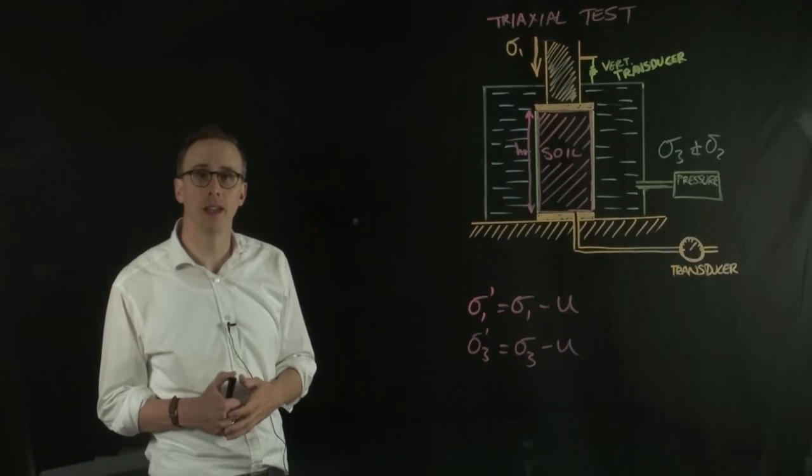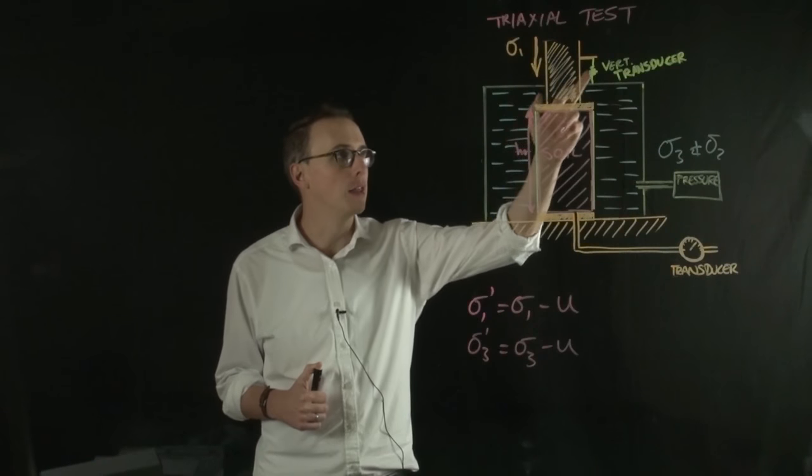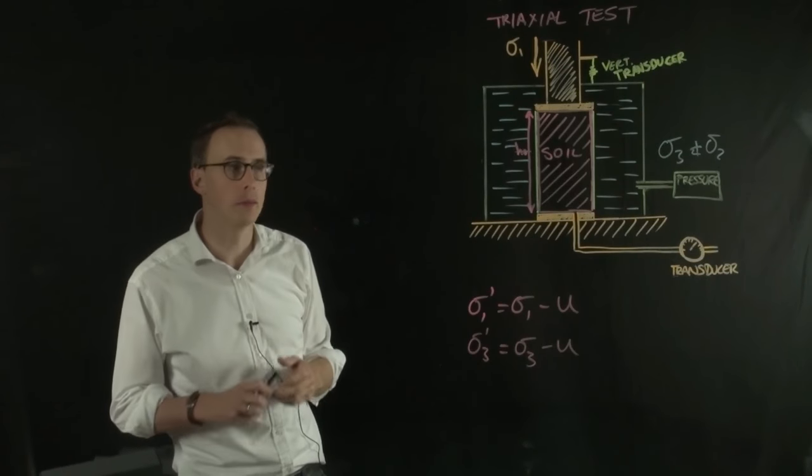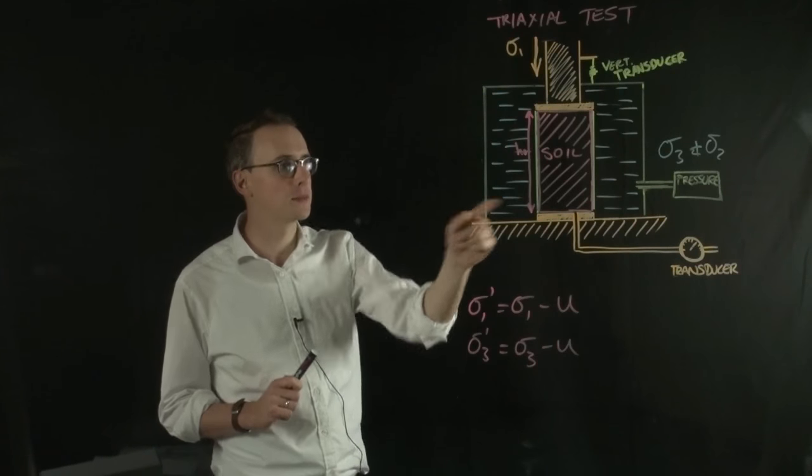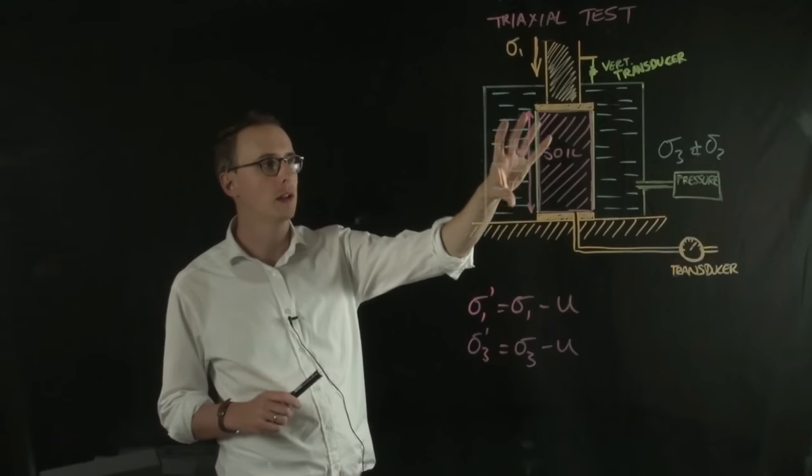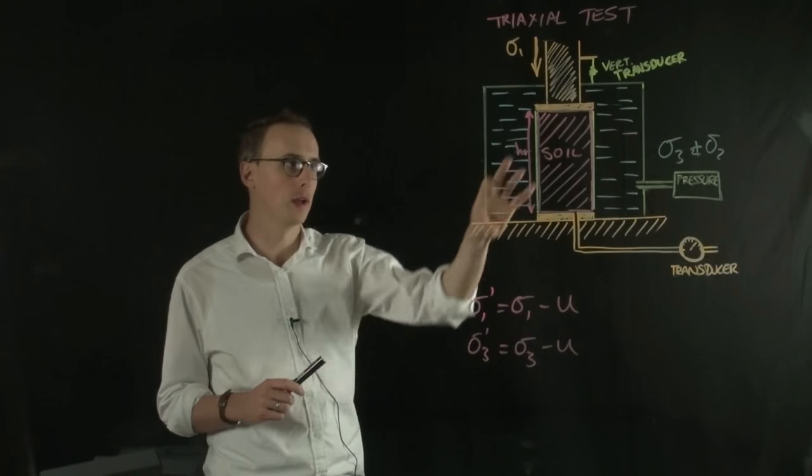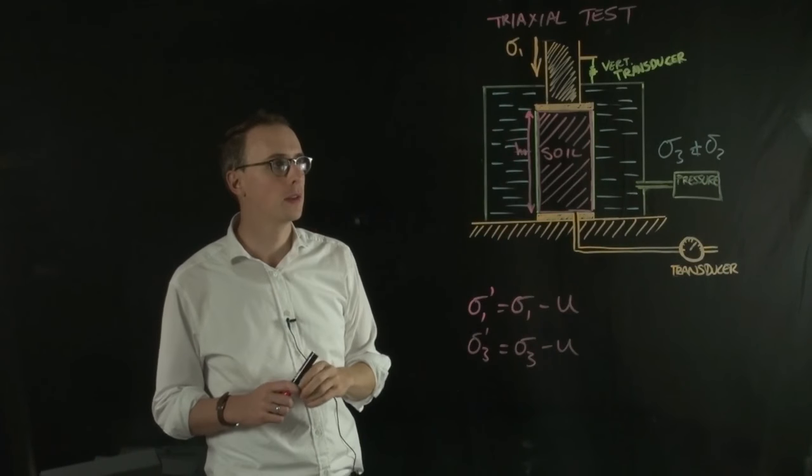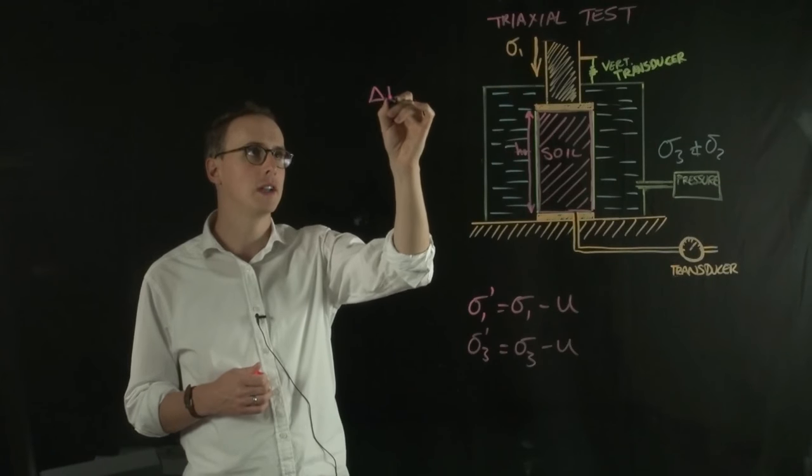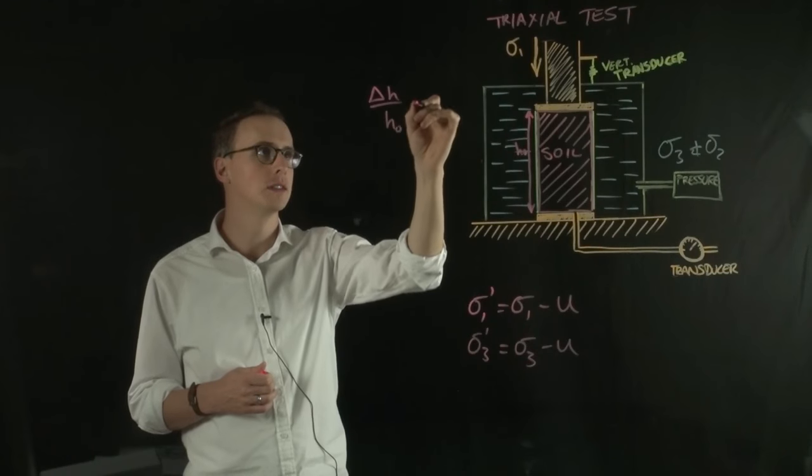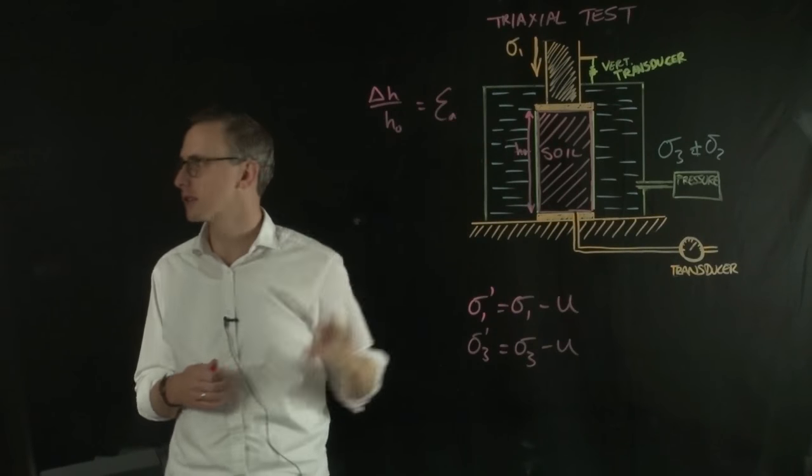We can also measure the vertical displacement of the sample. If we take the vertical displacement and divide it by the initial soil height, what we derive is the axial strain.